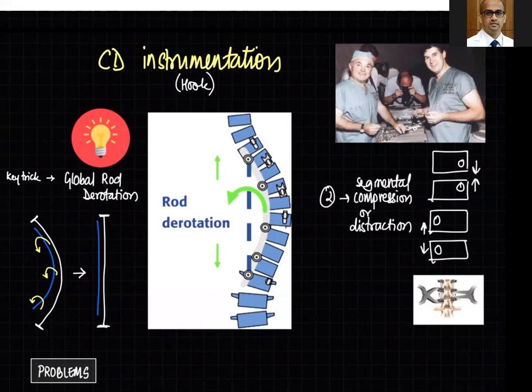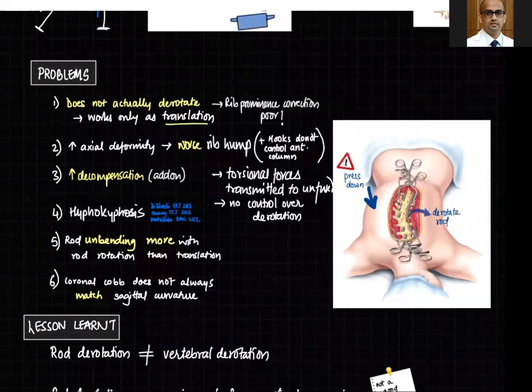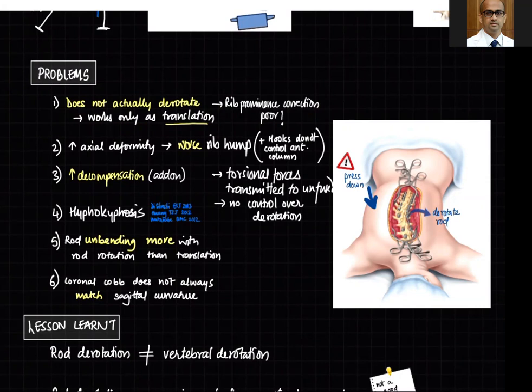The problem with CD instrumentation was that even though the rod derotates, it does not really derotate the spine — it does not correct the apical rotational deformity. Rib prominence correction was therefore not very good; it works mostly as a translational manoeuvre. Even the rod derotation manoeuvre essentially translates the apex towards the midline rather than truly derotating the apical vertebra.